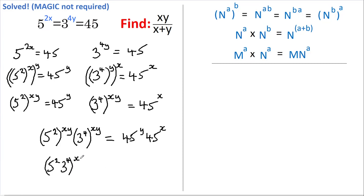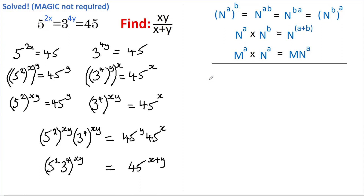And on the right-hand side we have the same base but different powers. Therefore, in accordance with rule number 2, I can write this as 45 to the power of x plus y.